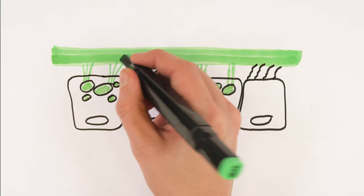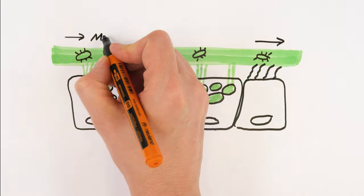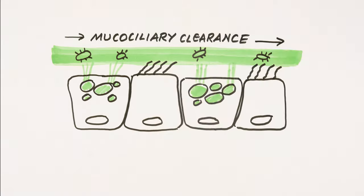Mucus traps bugs and pollutants which are then removed from the lung by cells which have hair-like structures called cilia on their surface. The cilia beat together to form a moving escalator carrying the mucus and any trapped material out of the lungs. This process is known as mucociliary clearance.